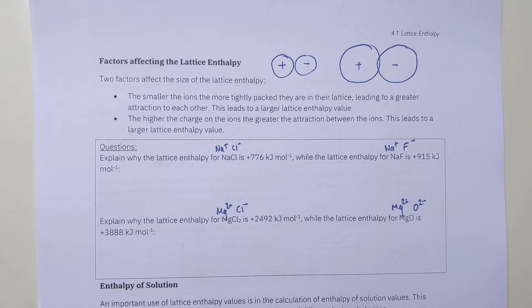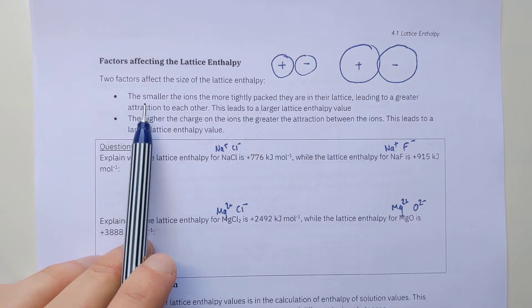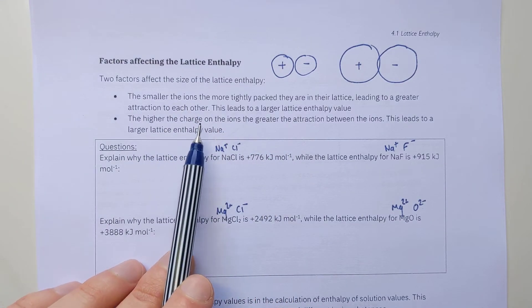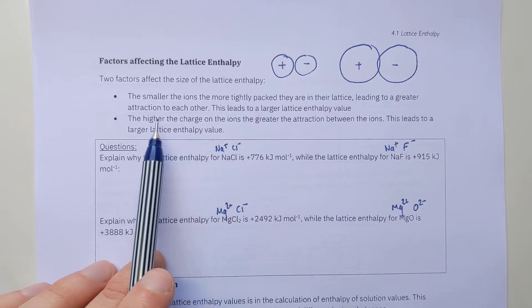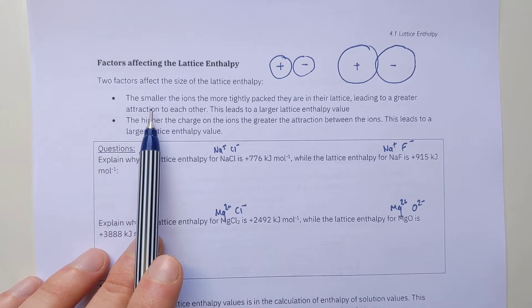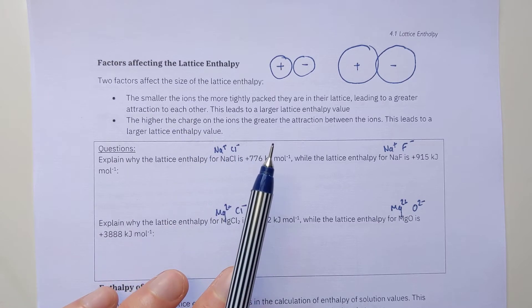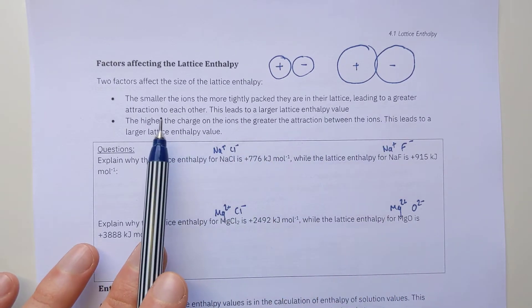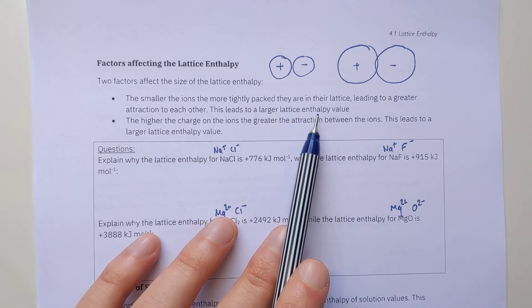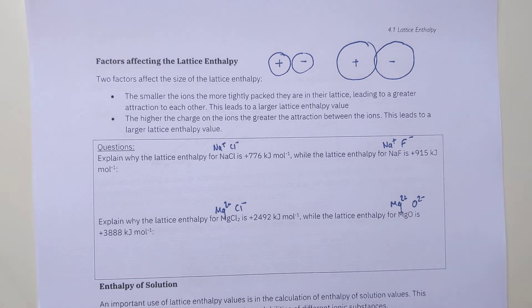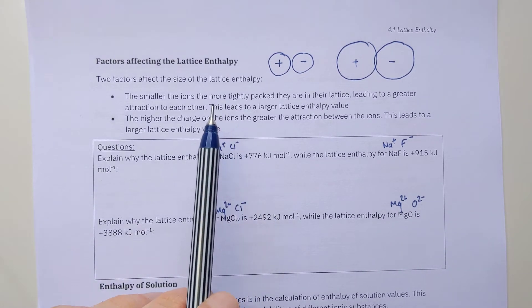The first factor is about size — the smaller the ions, the larger the lattice enthalpy. The second factor is charge — the higher the charge on the ions, the larger the lattice enthalpy value. The first one is a bit harder to understand. The smaller the ions, the more tightly packed they are in their lattice, leading to a greater attraction between them, leading to a larger lattice enthalpy value. The stronger the attraction, the more energy you have to put in to break that attraction apart.